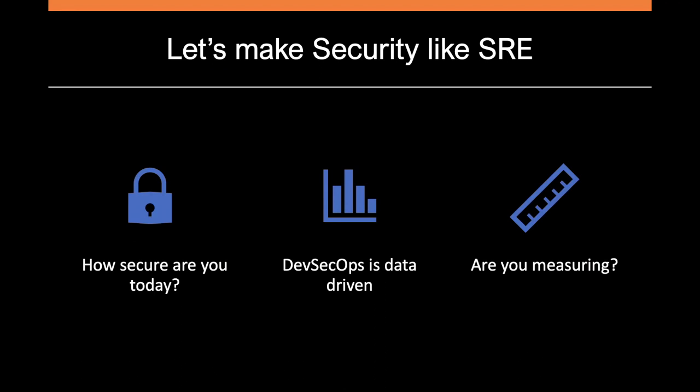The way we can enable better security is by making security look more like SRE. If I were to ask how secure are you today, could you provide a quantifiable answer? Are you measuring your assumptions on how secure you are? We need to make security more like SRE by sharing the same principles: being data-driven and measuring the data that we receive within an environment. Security collects data, observes the feedback, and makes continuous data-driven decisions to improve security. Are you scanning your images? Do you apply network policy? Are you encrypting your data at rest? How are you measuring the efficacy of these protections?